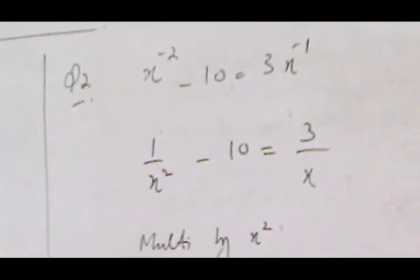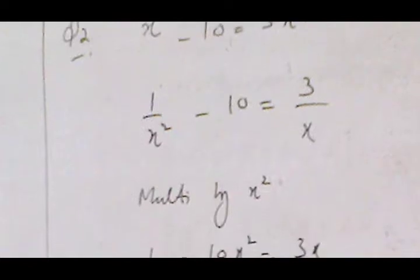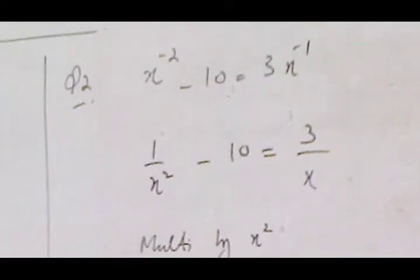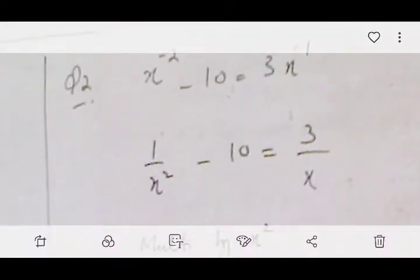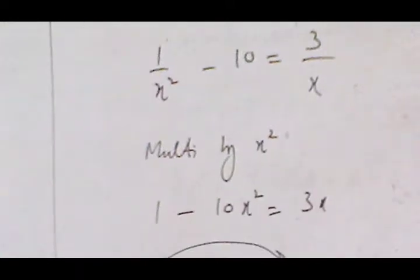In question number two we have x to the power minus 2 and x to the power minus 1. We can write x to the power minus 2 as 1 over x², and multiply both sides by x².